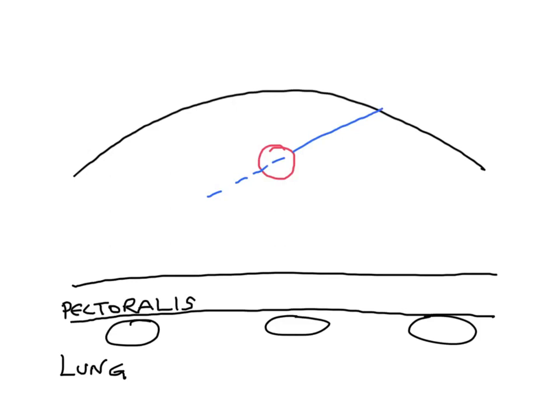But if you have a lesion that's back here, then you're going to have to be much more careful with your target. If you came down at the same angle here as you did with the other lesion, you're probably going to get at least pectoralis, and if you weren't careful, particularly with even more posterior lesion, you're going to go into lung.